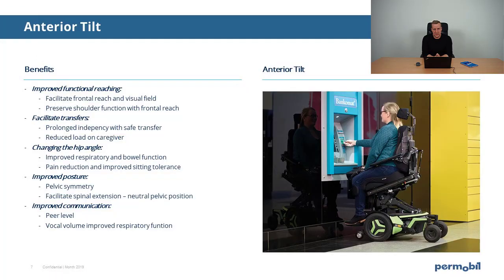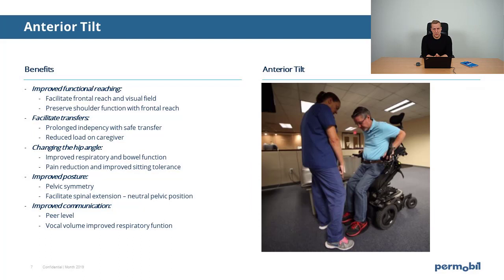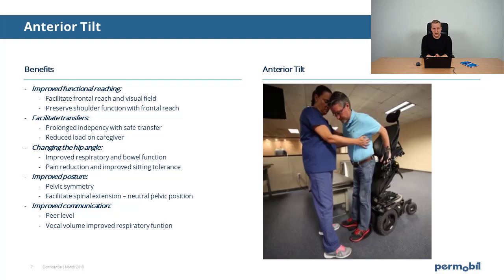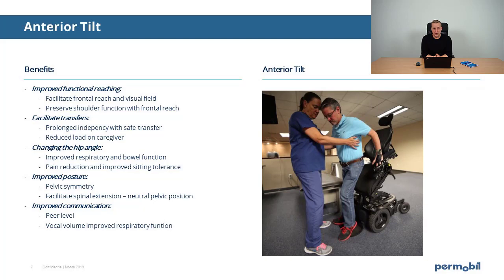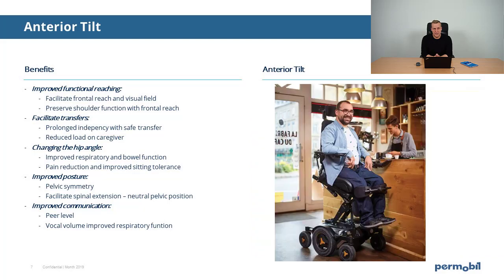The next PowerSeat function is the anterior tilt or active reach function. While the lift function only brings you higher, the active reach function brings you higher and closer to the objects you want to reach for, facilitating reach into the frontal plane. The active reach also helps facilitate transfers. The combination of active reach with the lift function brings you into a transfer-ready position where you don't need to move yourself to the front part of the seat. While using the active reach, the recline function automatically synchronizes, opening the hip angle.